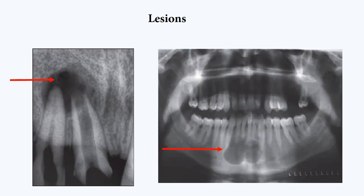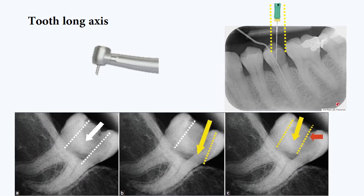Next is to find out lesions and their size, location, and severity — whether it's a small granuloma or a large cyst, whether it's odontogenic or not, or even whether it could be benign or malignant. As you can see in the examples shown, another importance of X-ray is to identify the tooth's long axis.